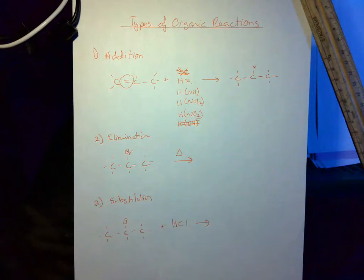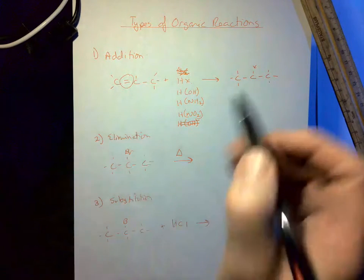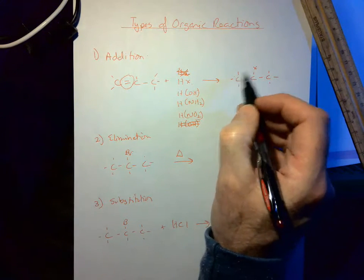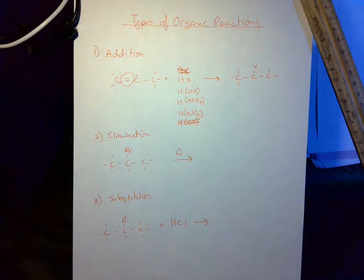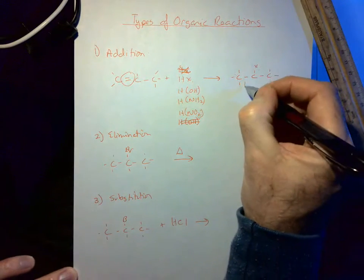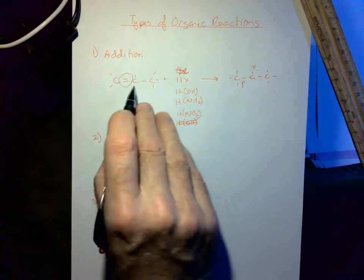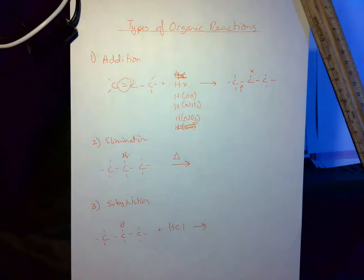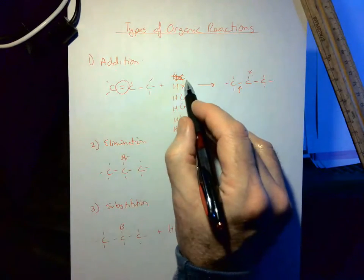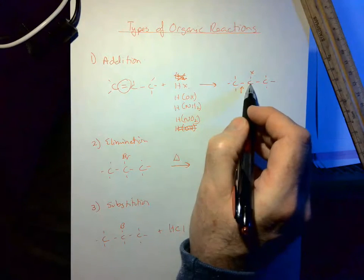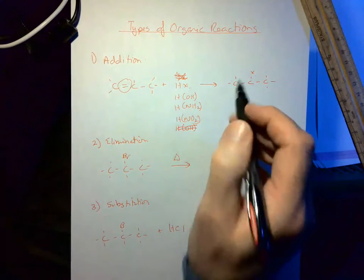So you are allowed to put the hydrogen on the other carbon if you'd like. In that case, the X would go over here and the H would go over here. But what we've done is we've broken the double bond. The double bond that was here has disappeared. We took one part of the molecule, put it on one carbon and the hydrogen on another.